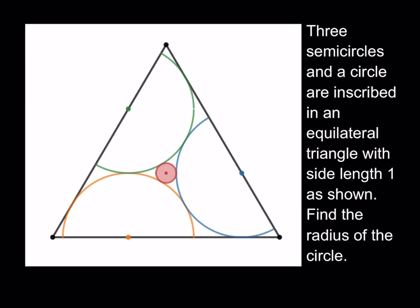We have three semicircles and a circle that are inscribed in an equilateral triangle with side length 1, and we're supposed to find the radius of the circle. We'll have two main steps. First, we're going to find the radius of the semicircles — by the way, the semicircles are congruent.